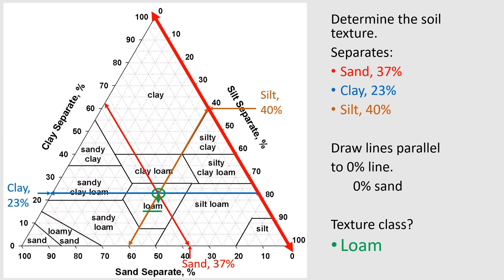We took 37% sand, 23% clay, and 40% silt, plotted those on the triangle graph — a triangular graph is a little unusual, so learning how to use it is important in understanding soil texture. Those lines intersected in the middle in the loam category. Loam is different from the particle sizes sand, silt, and clay because it's a specific mixture. You'll also notice that clays, sands, and silts have their own texture classes because they're dominated by one particle. Clay has the biggest category at the top because clays overwhelm all other soil properties.